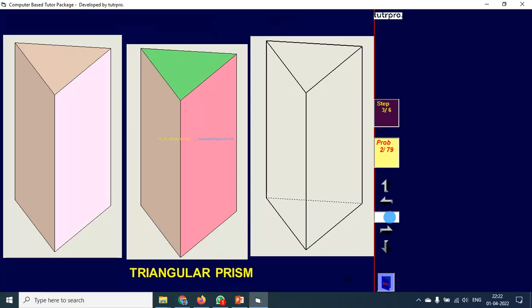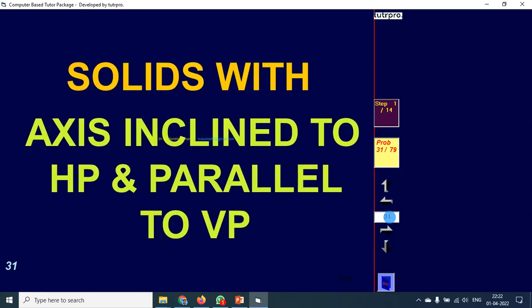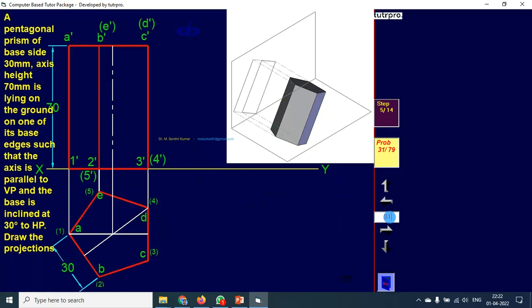Let me jump into problem number maybe 31. Solid axis inclined to HP and so on. So this is the question. So these are the steps.